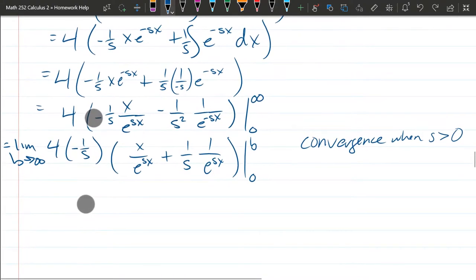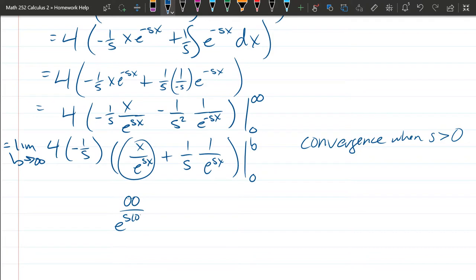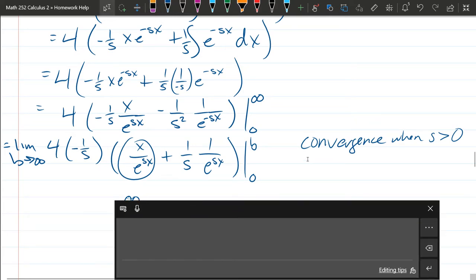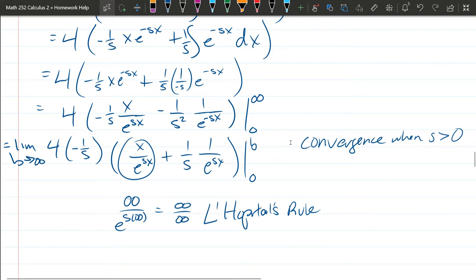You're going to have one more problem. You're going to get when you plug infinity, you're going to get here: infinity over e to the s times infinity. And how do you deal with this? That's infinity over infinity. You're going to use L'Hopital's rule to deal with that. And so you're going to deal with that separately by using L'Hopital's rule, and the rest is just plugging in and carefully taking your limit.